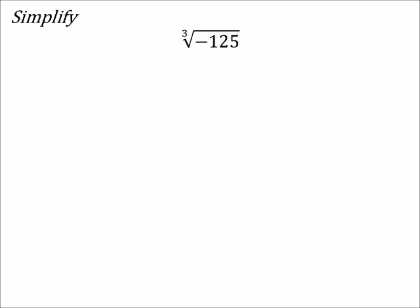All right, this one shows the cube root of negative 125. So, since it's a cube root, we need three numbers that are the same being multiplied together to give us negative 125.